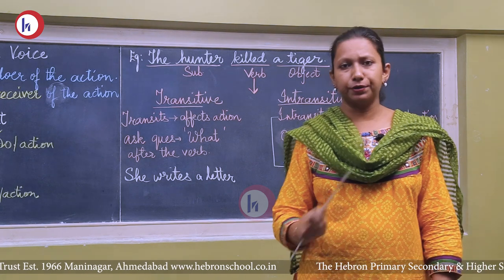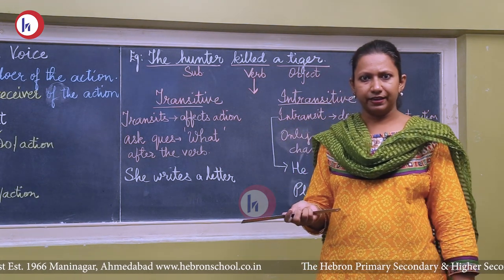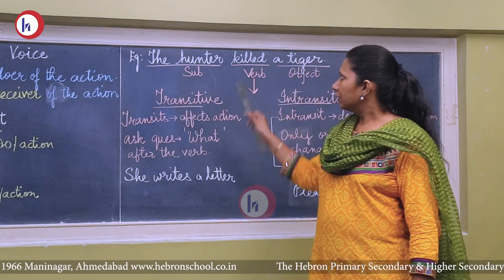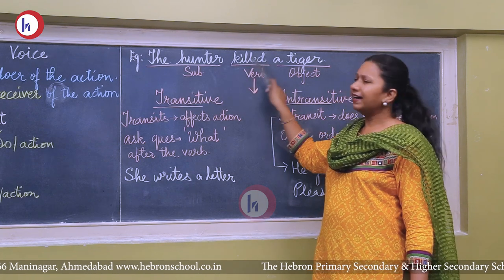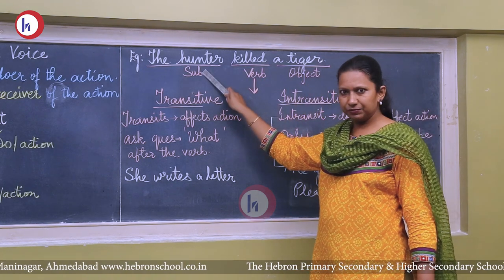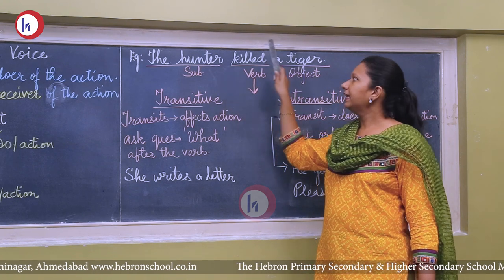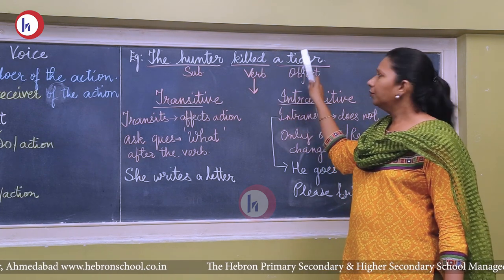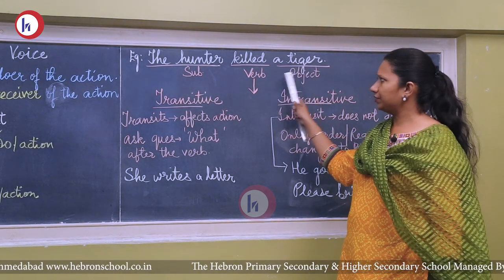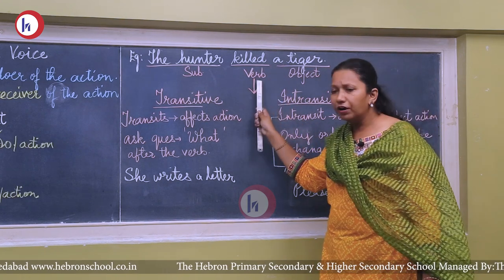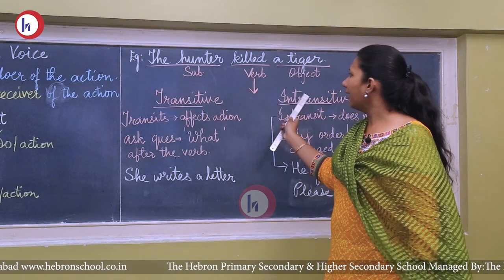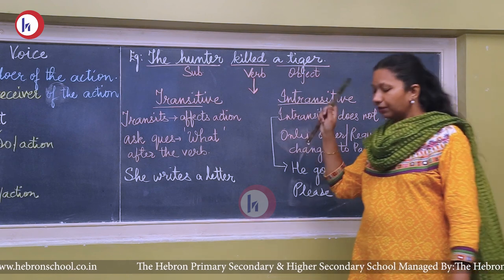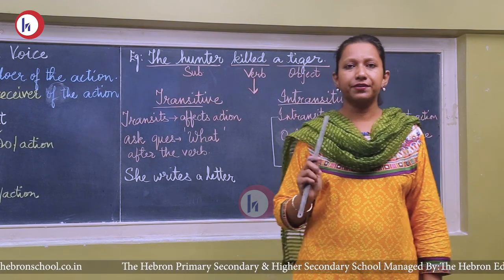A sentence cannot be formed without a verb, but a sentence can exist without an object. The verb is essential. When dividing a sentence, first identify the subject — the doer of the action — then underline the verb, and third identify the object — the receiver of the action. For active and passive voice, a verb is divided into two types: transitive and intransitive.